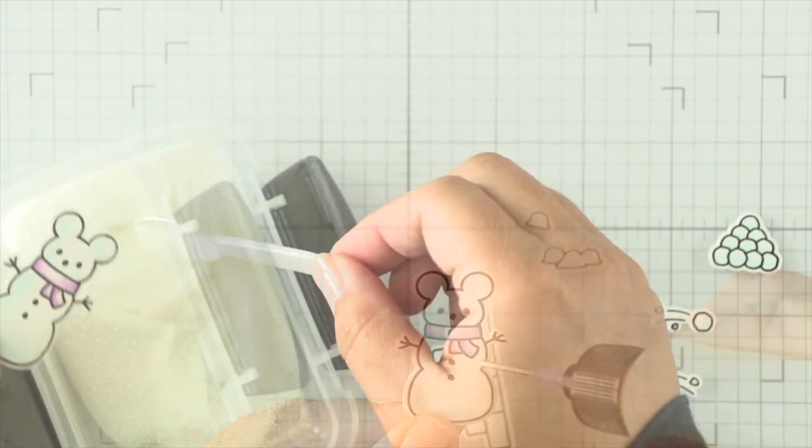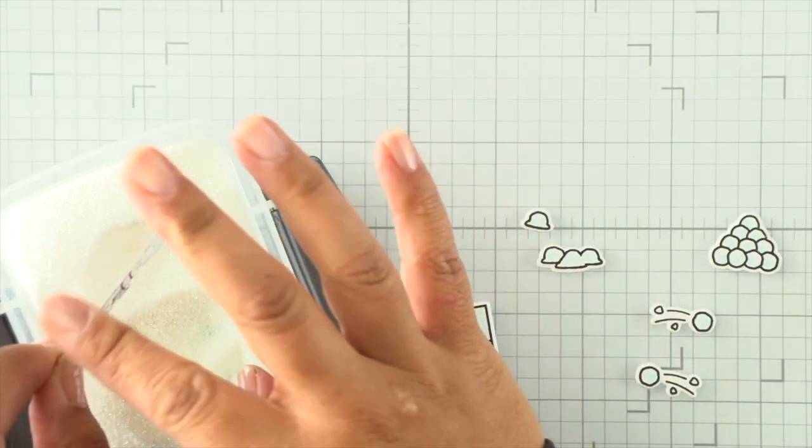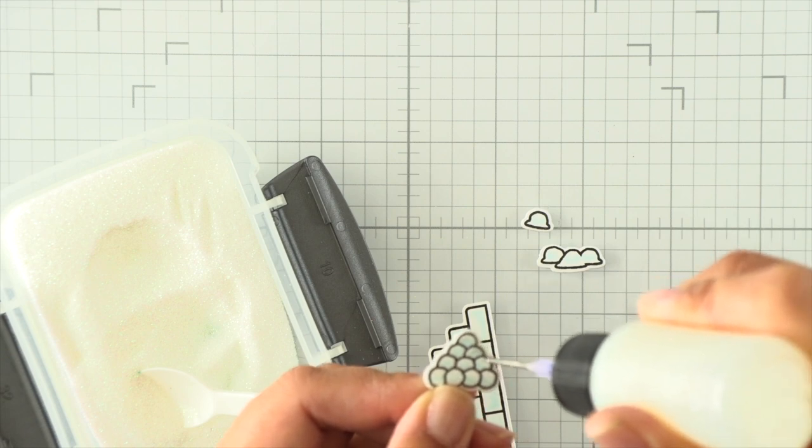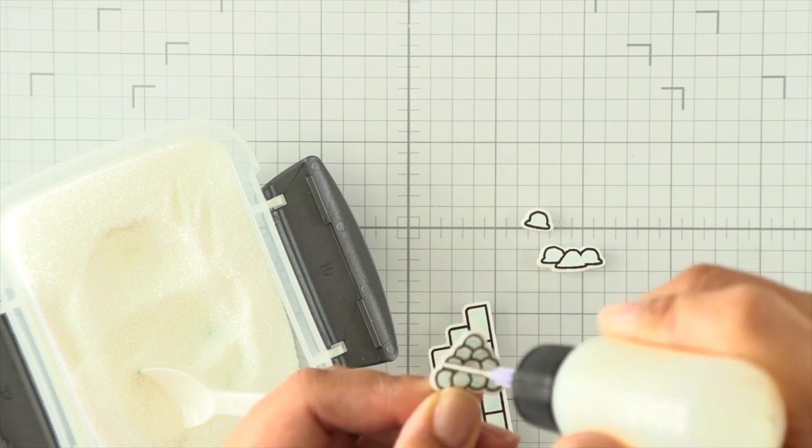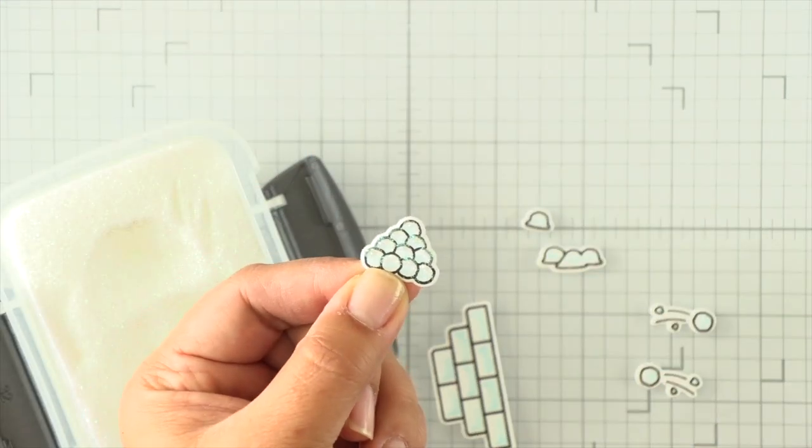For the shading on the Copic coloring I did bottom left, so for the shimmer and shine I'm going the opposite and going with the upper right hand corners and sides of all the images. I'm doing the same thing with this snowball cluster.